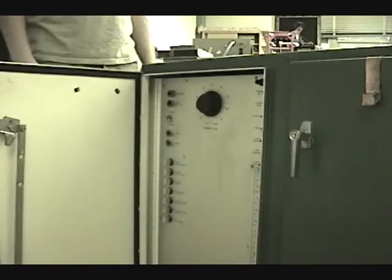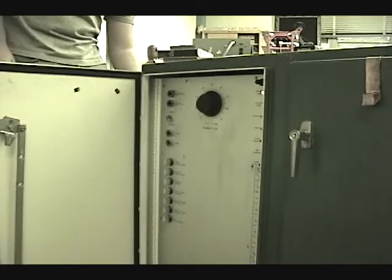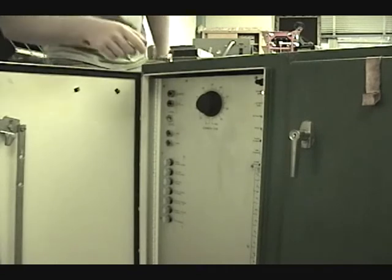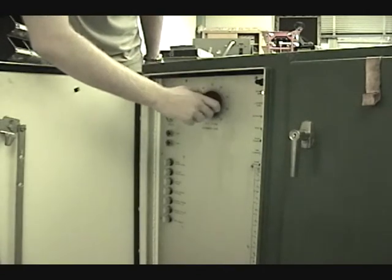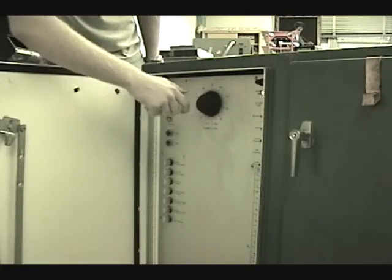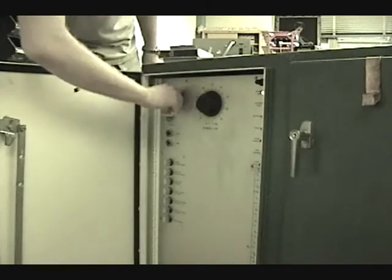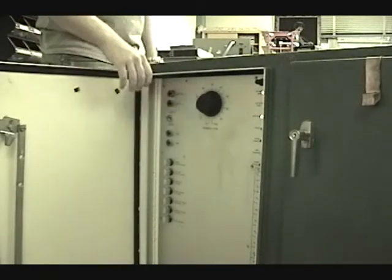To run the experiment, the capacitor bank is turned on and the discharge energy is selected. We will use 3.2 kJ for this experiment. The capacitor bank is now activated, and we discharge.